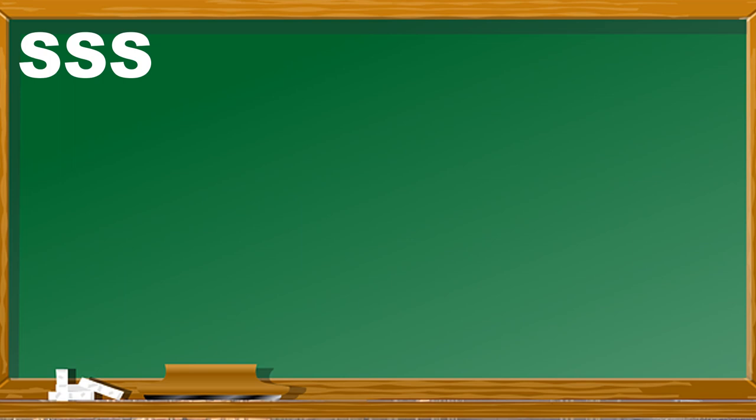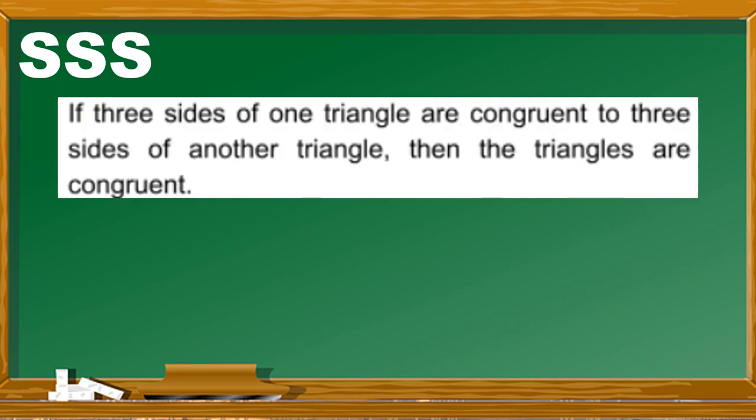Let's start with the first postulate, which is the SSS or Side-Side-Side postulate. If three sides of one triangle are congruent to three sides of another triangle, then the triangles are congruent. In proving two triangles, we can use the direct method, specifically the two-column proof, using statements and reasons.